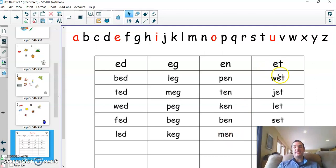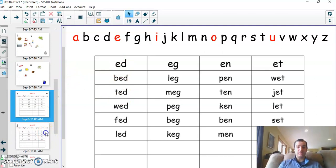Here's the e-t ending. Wet, jet, let, set. So you can say as long as you have the correct e sound, then it all kind of blends together.